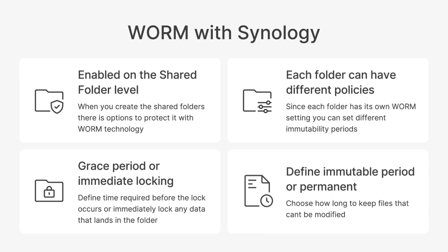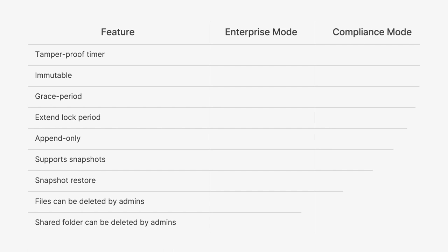On a Synology NAS capable of write-once-read-many technology, you can select what mode the folder is in. Enterprise mode is ideal for archiving and securing data, providing administrators the flexibility to delete the write-once folders if needed. Compliance mode is more restrictive and designed to meet regulatory requirements — even the highest-level administrators cannot modify or delete files in compliance mode folders. If you're in compliance mode, consider using the grace period to guard against mistakes, and it may also be a good idea to set a quota for those folders since even admins cannot delete data from them.